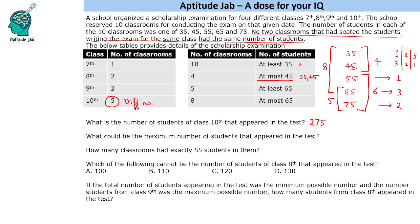The next question asks: what could be the maximum number of students that appeared in the test? To maximize, we fix the known counts — 1 room with 55 students, 3 rooms with 65, and 2 rooms with 75 — and for the 4 remaining rooms we assume 1 room has 35 and 3 rooms have 45. Calculating: 35 + (45×3) + (55×1) + (65×3) + (75×2) = 35 + 135 + 55 + 195 + 150 = 570.